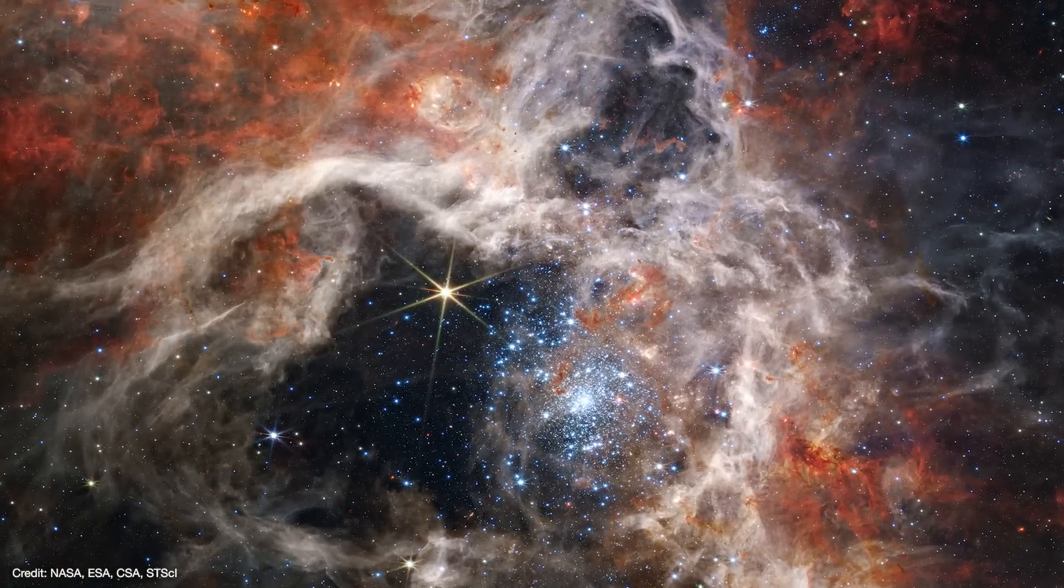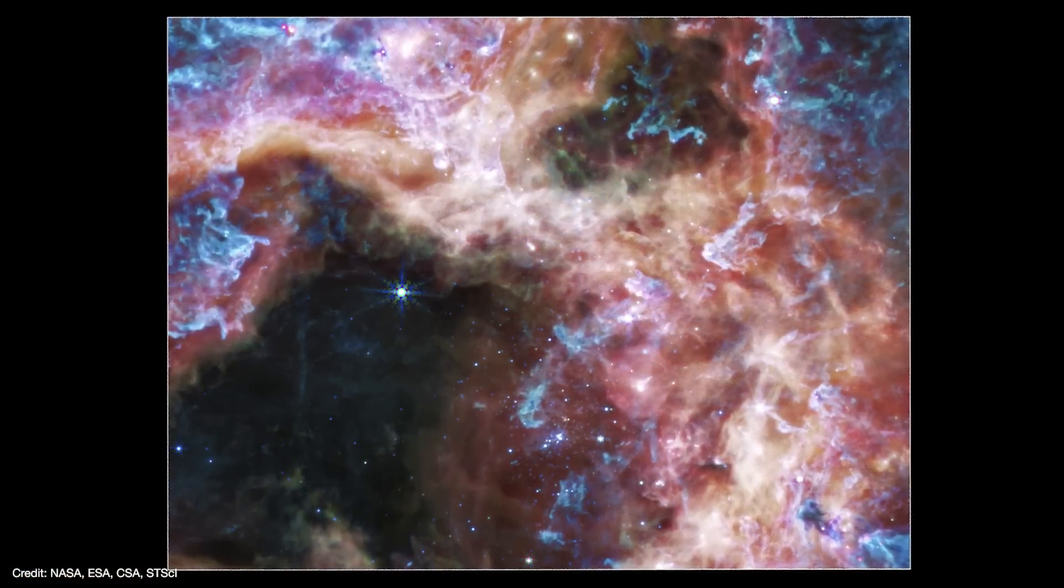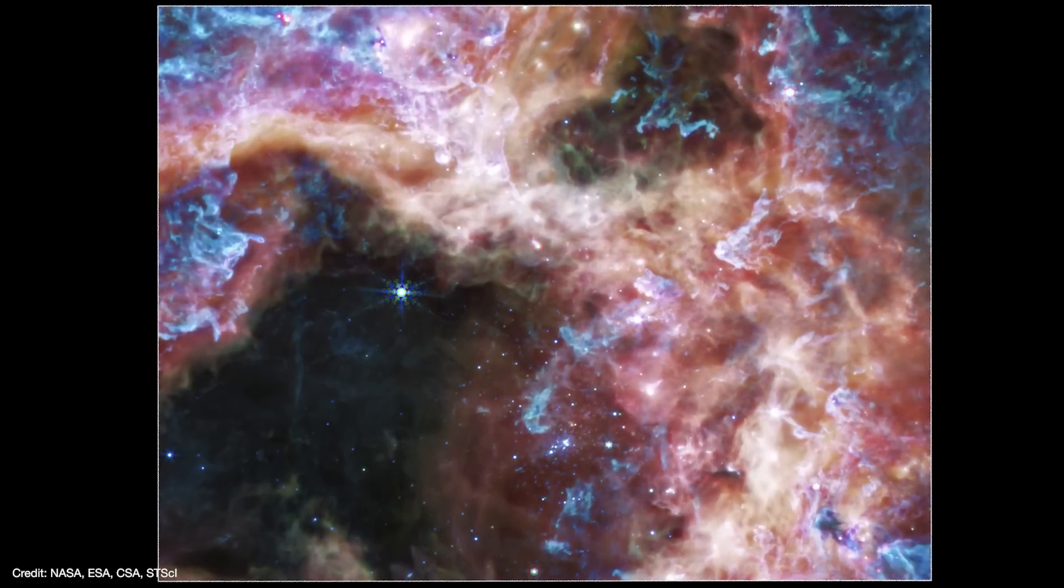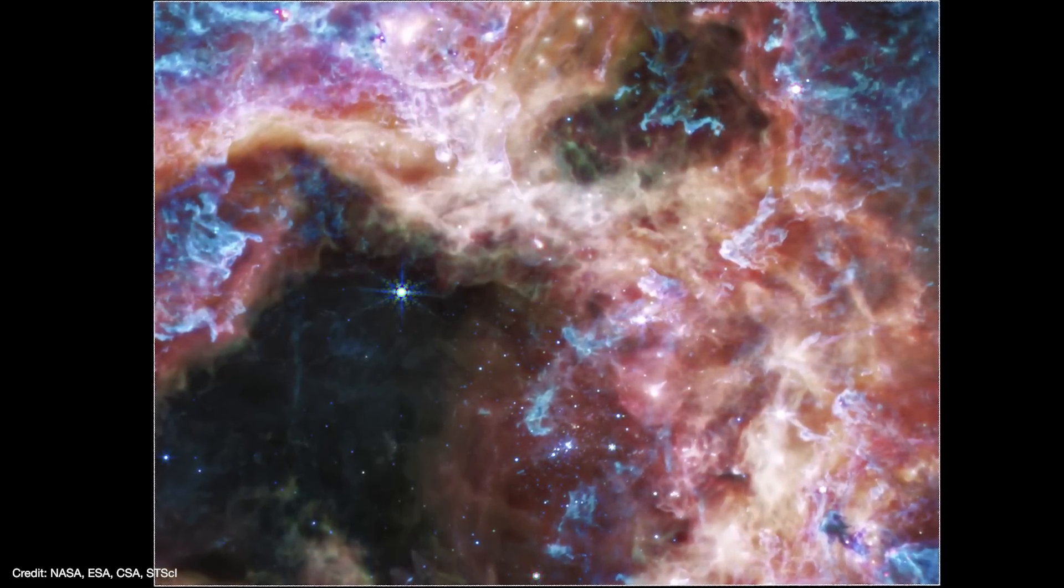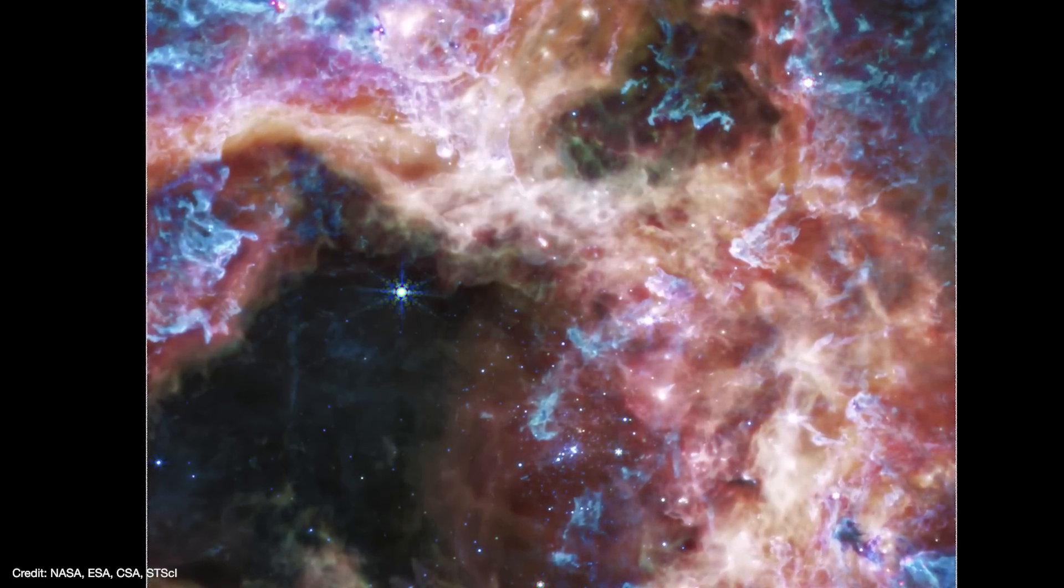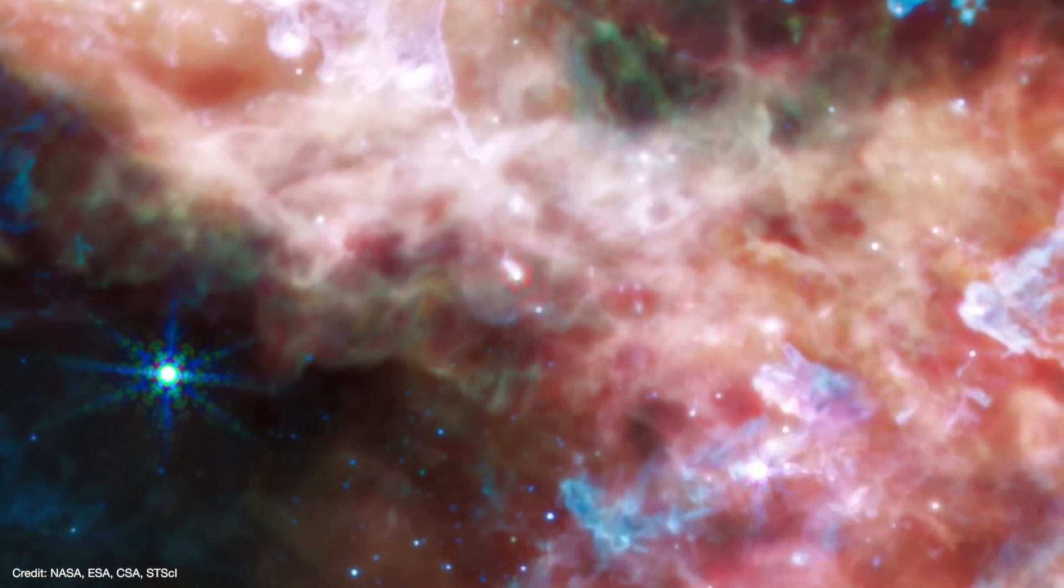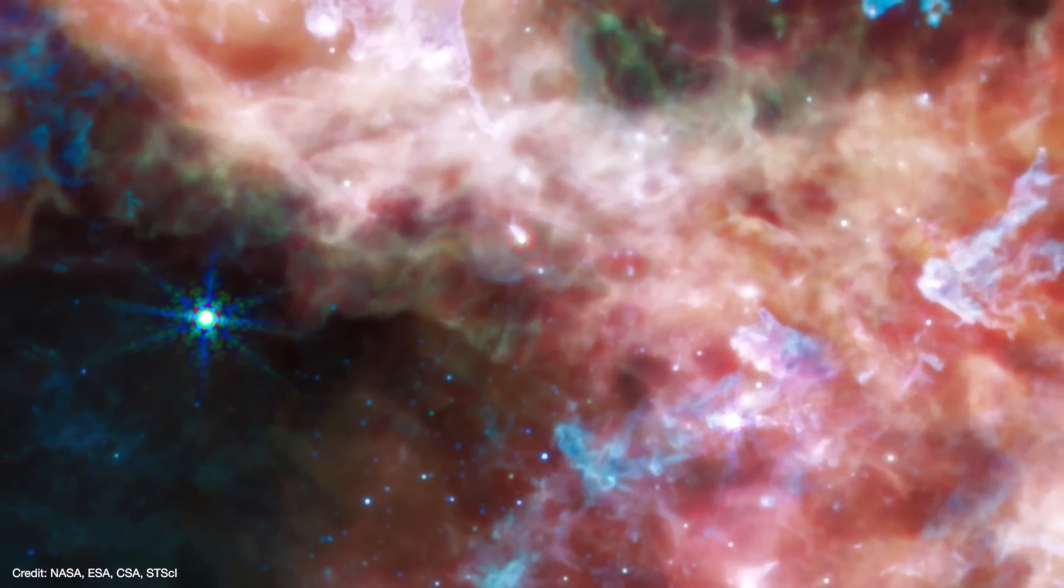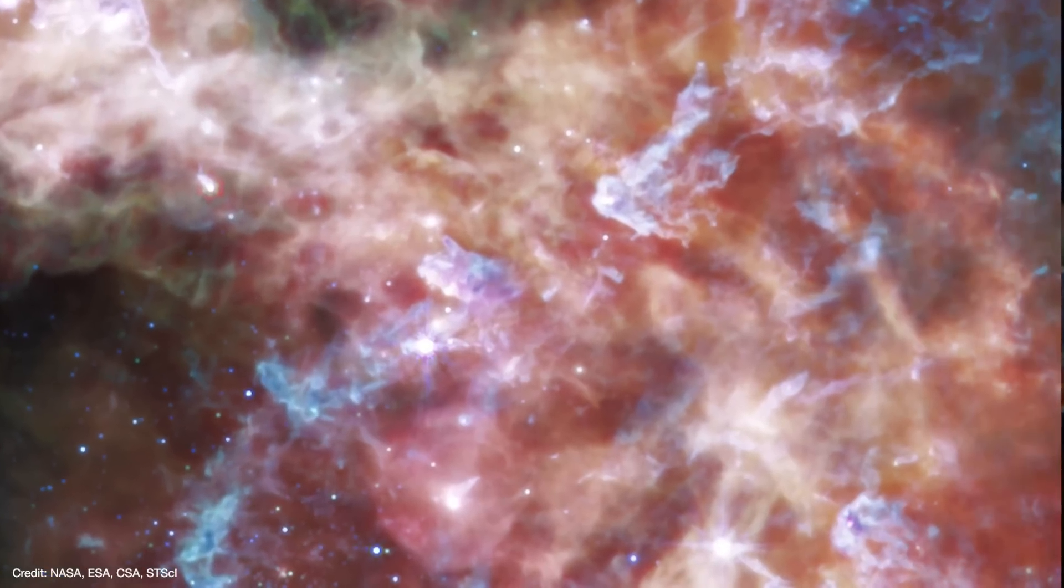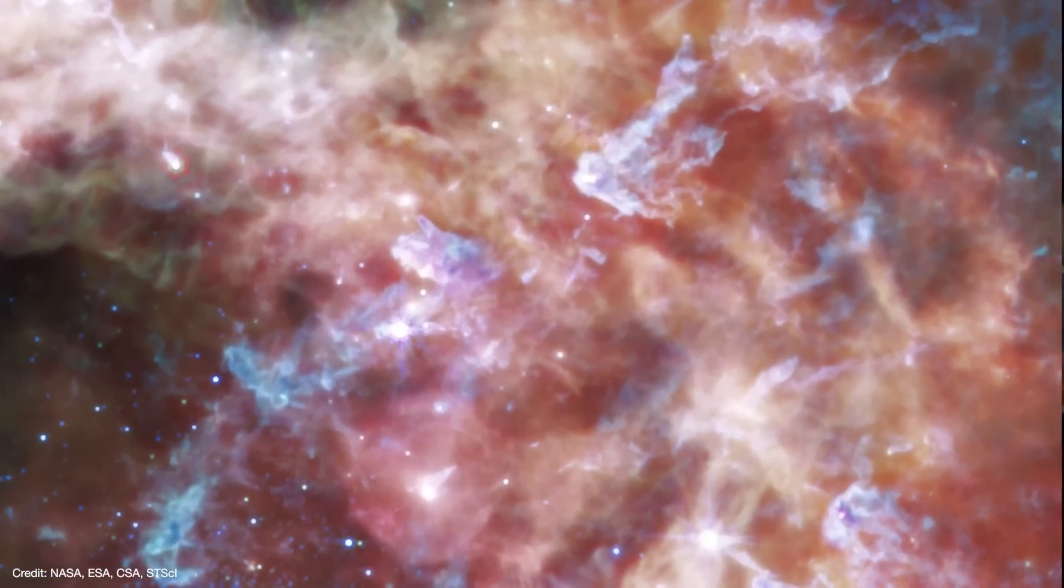But to see even deeper into these clumps, Webb used its MIRI instrument to view the region at mid-infrared wavelengths. The bright stars largely disappear because they produce very little of their light at these longer wavelengths, while the cooler hydrocarbon gas brightens. Because this is taken with a different instrument, the hydrocarbon gas is colored blues and purples, while cooler gases are colored red. MIRI lets us glimpse protostars that are embedded in these knots, and we're seeing these stars for the very first time.